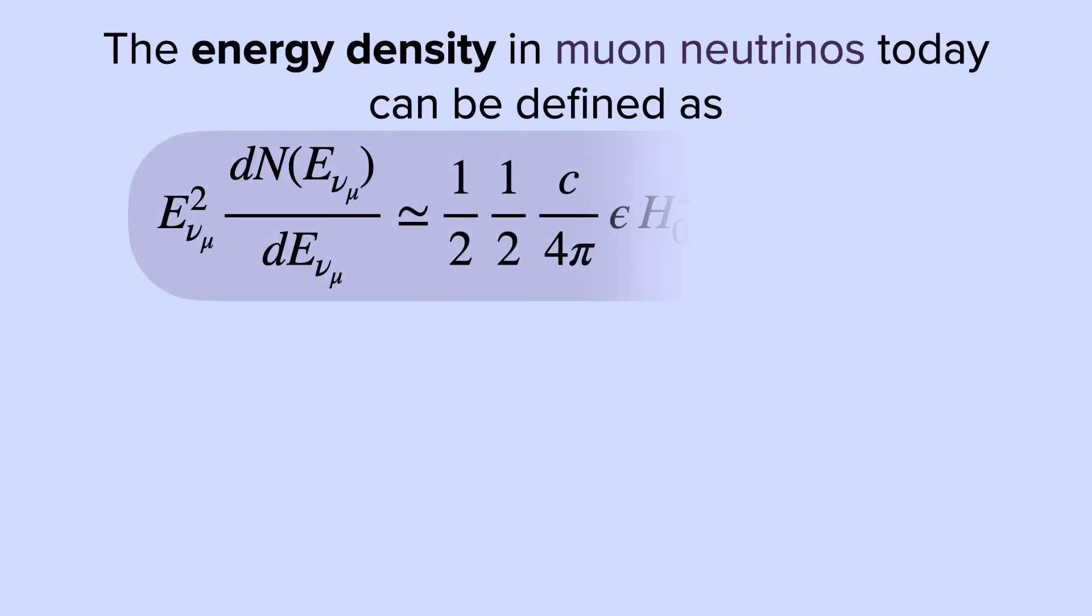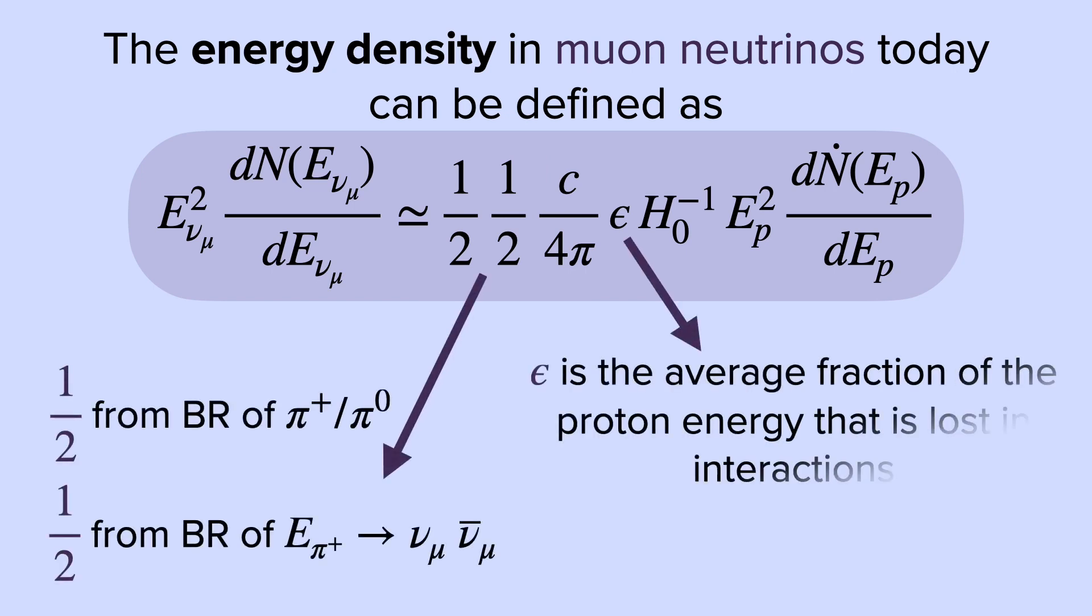The energy density in muon neutrinos today can be defined as so, where it depends on different factors. For example, these one-half factors come from the branching ratios of charged to neutral pions, and also the branching ratio of the charged pion having enough energy to produce the muon neutrinos. Then, we have this epsilon factor, that is the average fraction of the proton energy that is lost in these interactions. And finally, the inverse of H0 is simply the Hubble time.